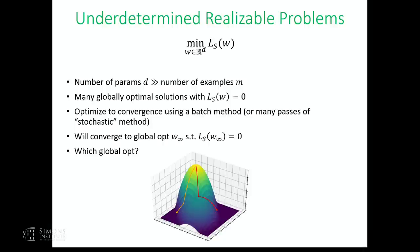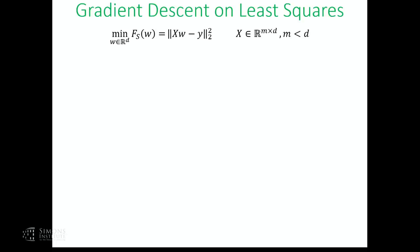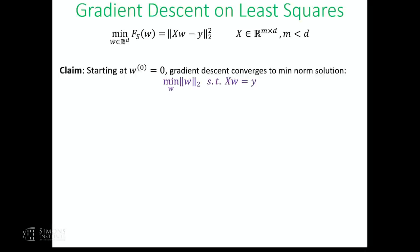Let's start with the simplest possible problem: just least squares. We're optimizing an underdetermined least square problem — many more dimensions of variables than equations. There are many solutions, but the question is: if we optimize starting from zero, which of these many solutions will we get to? The minimum Euclidean norm solution, closest to the initialization. If we start at zero, we get to the minimum norm solution.